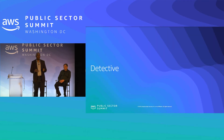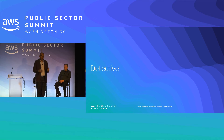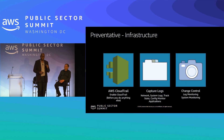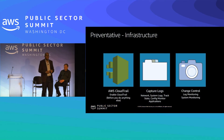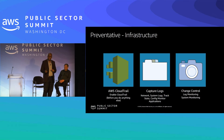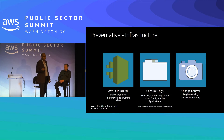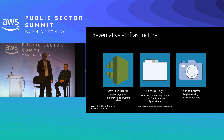Now we're going to put our detective hat on. The detective controls — AWS CloudTrail: when AWS was started, the decision was made to make everything API-driven. That was a very important decision. The other decision was that everything is logged.